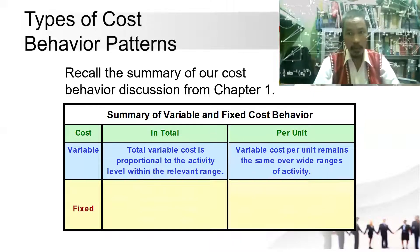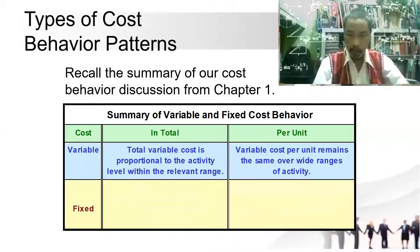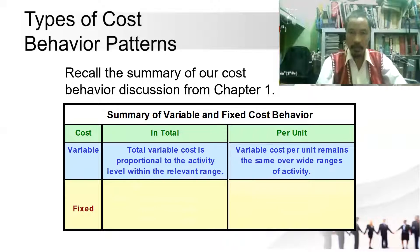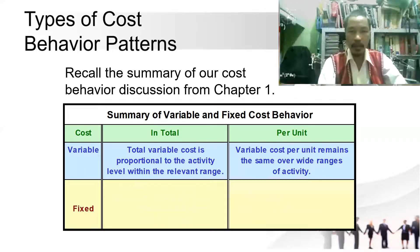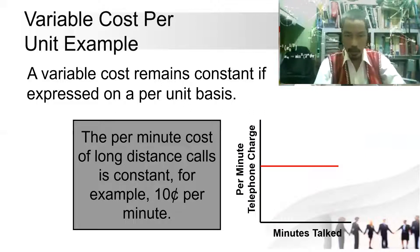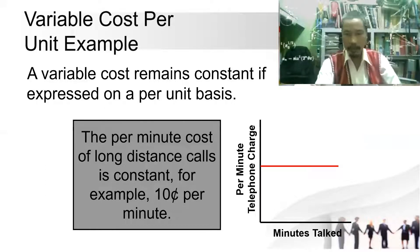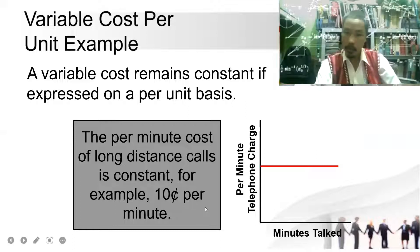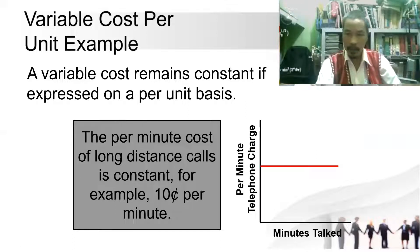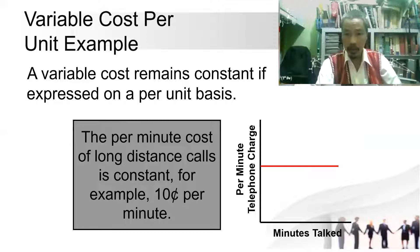Using the telephone example, the charge per minute is constant — usually fixed. Therefore, the variable cost per unit remains the same. For example, 10 pesos per minute. That is the characteristic of variable cost: it remains constant if expressed on a per unit basis. When graphing the relationship of minutes versus per-minute telephone charges, that rate is constant.